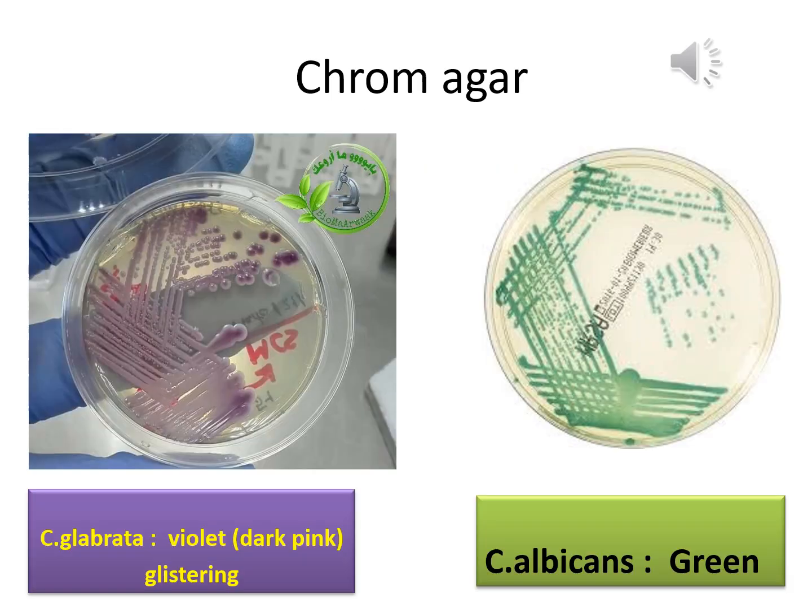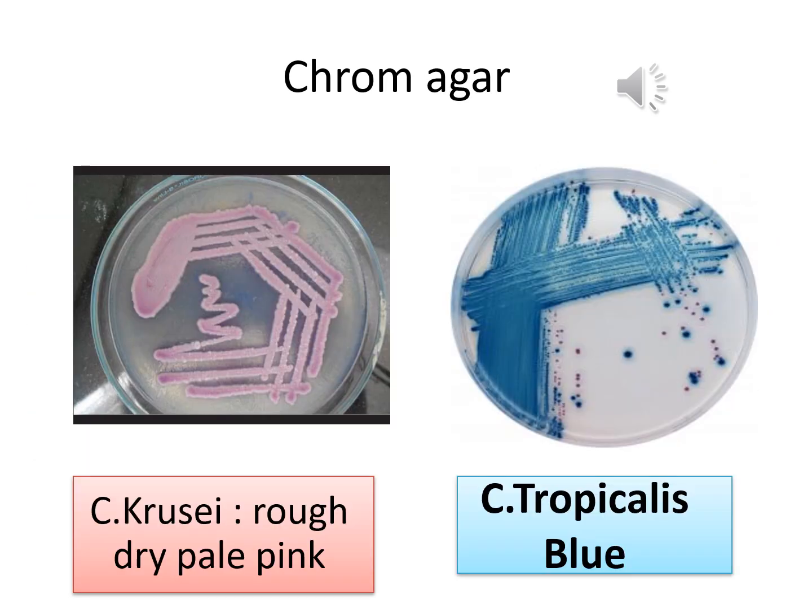CHROMagar is a novel differential culture medium that facilitates the isolation and identification of clinically important yeast species. Candida albicans isolates give green colonies, while C. glabrata gives clustering violet or dark pink colonies. Candida tropicalis develops dark blue-gray colonies, while Candida krusei forms highly characteristic rough spreading colonies with pale pink centers and white edges.